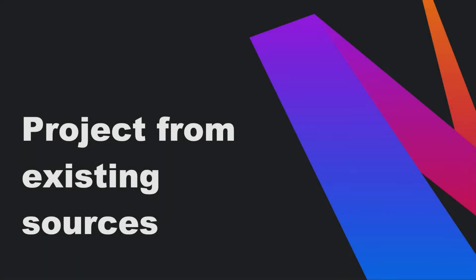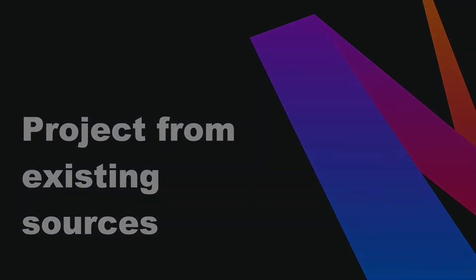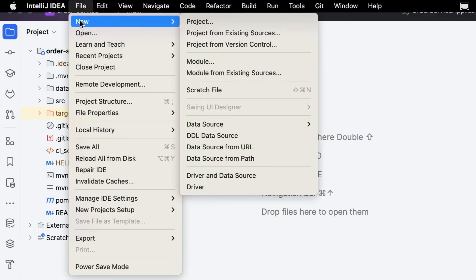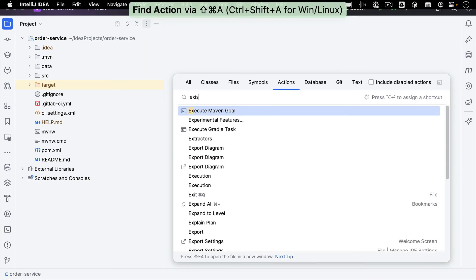As mentioned, if we have a project that isn't an exported project or doesn't use an existing model like Maven, Gradle, or Eclipse, we can create a new project from existing sources — for example, if we're importing a project that was created in a different IDE like NetBeans. To do so, we go to Import Project from Existing Sources, either from the menu via File > New > Project from Existing Sources, or by using Find Action.